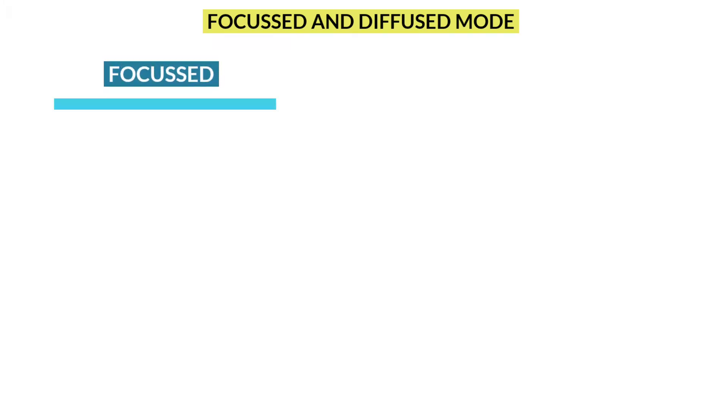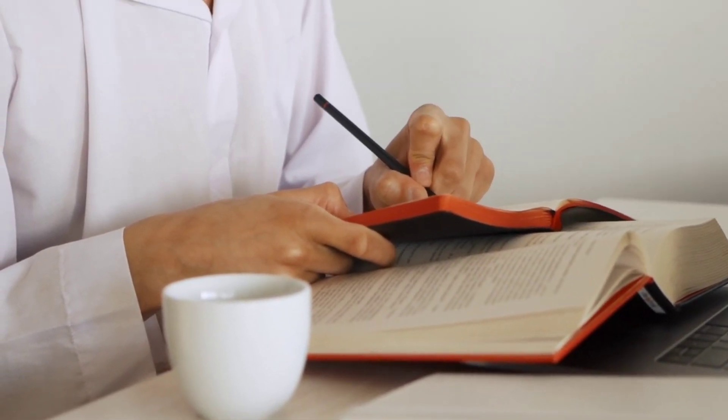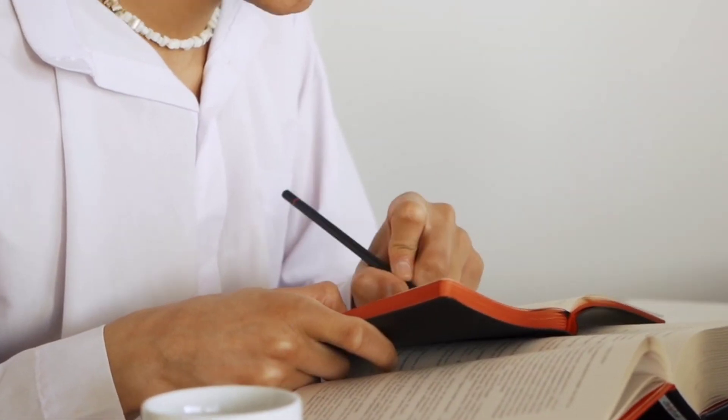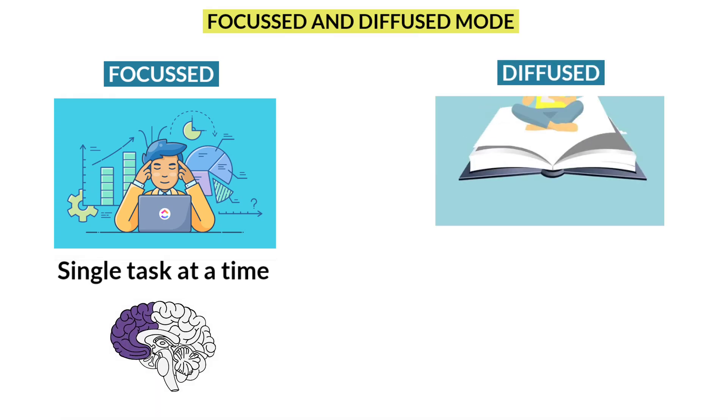First one is focus mode. You use this mode of thinking while you are studying or solving any questions with full concentration and without any distraction. You use focus mode of thinking while doing a single task at a time. While you are studying in focus mode, only one area in your brain is activated.